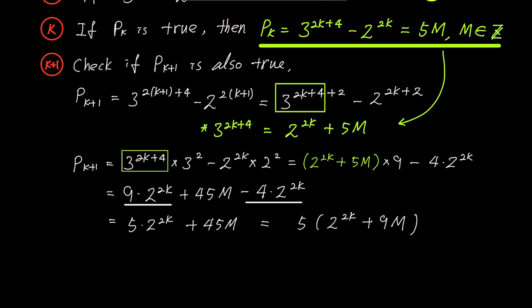Therefore, we have shown that pk plus 1 is divisible by 5. We have now shown that if the kth domino falls, the k plus 1th domino also falls. This completes the induction step.